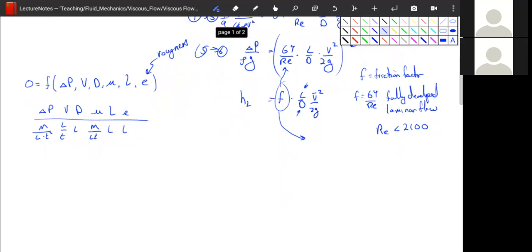So I'm going to now figure out how many pi groups we have. So we have six physical variables and we have three physical dimensions. And so we're going to get three pi groups. And that also means, by the way, that we have three physical dimensions. We have to pick three repeating parameters. So I'm going to pick V, D, and mu.